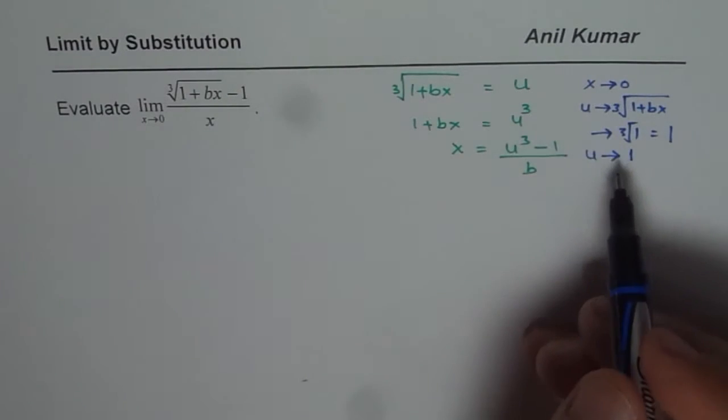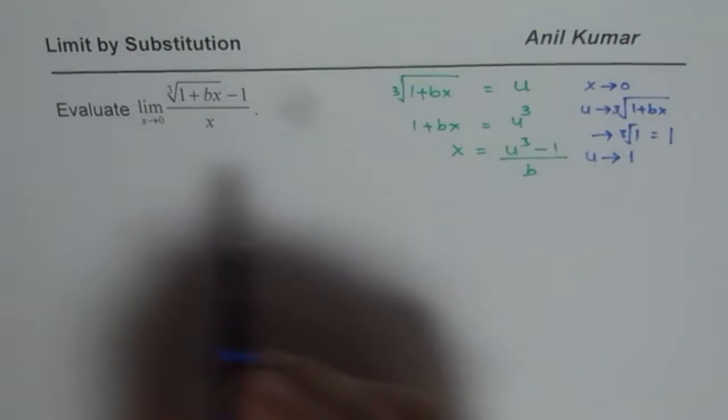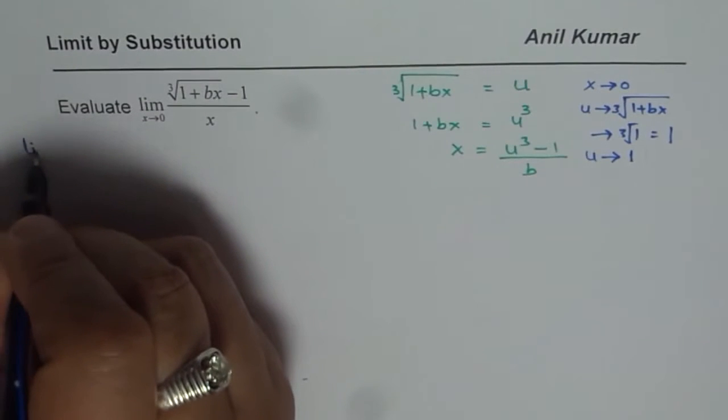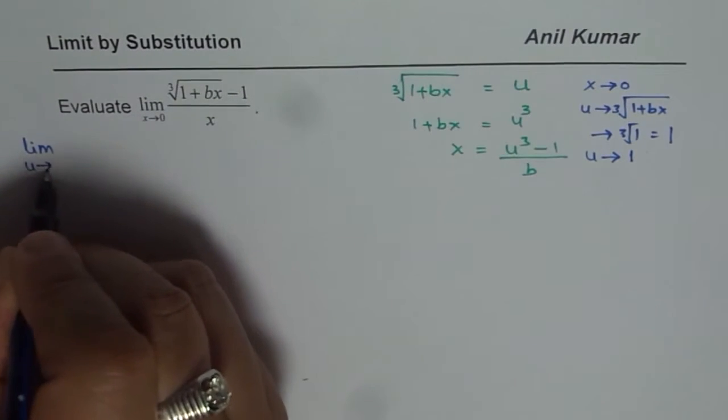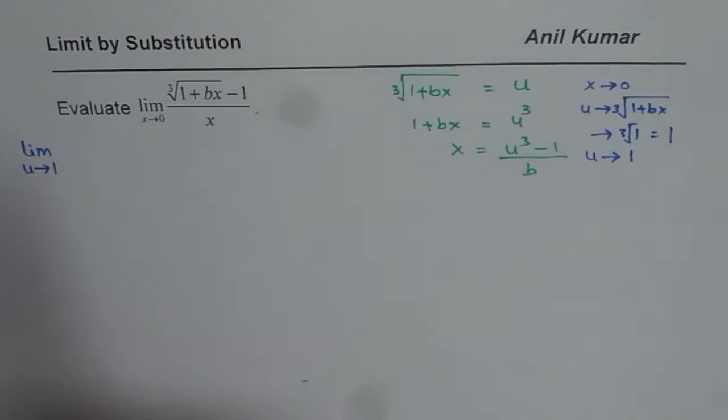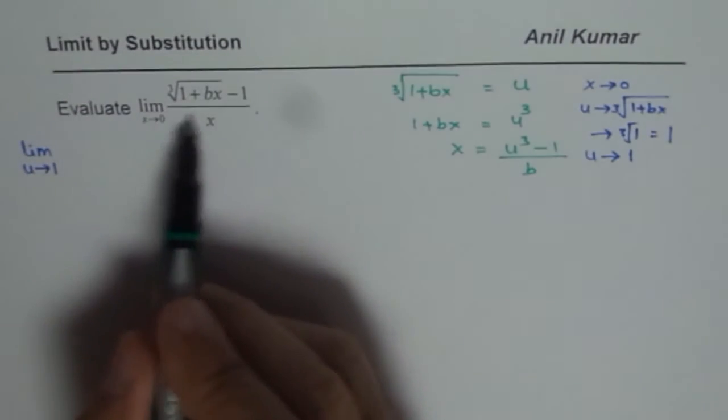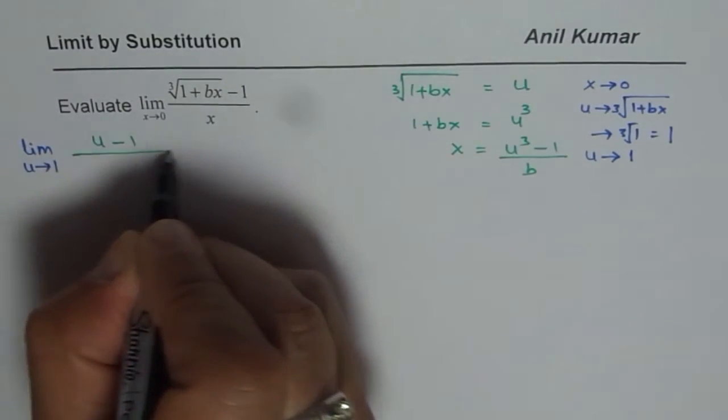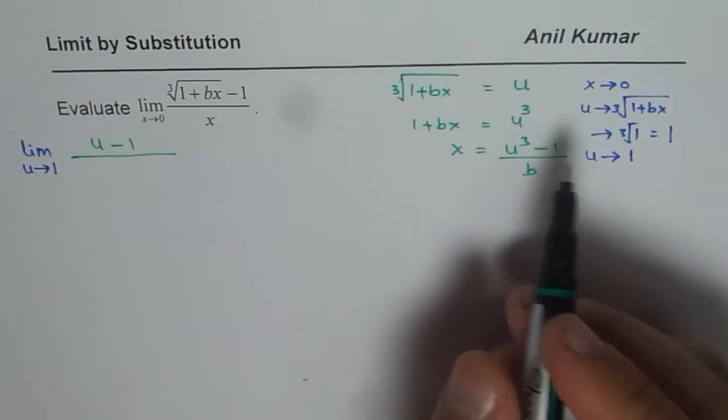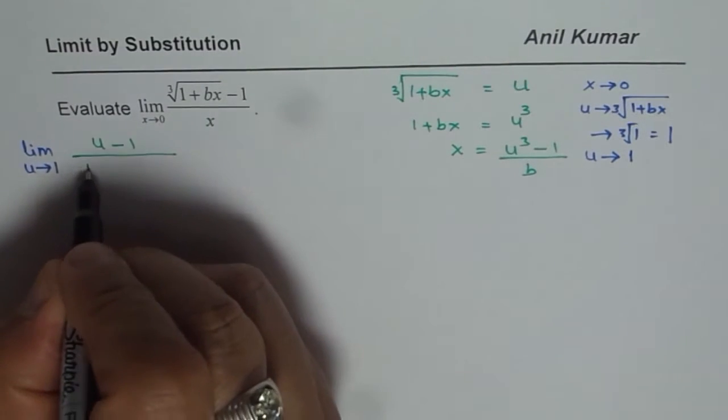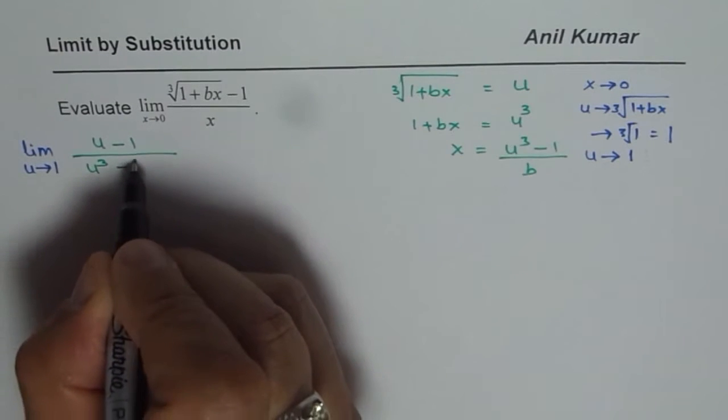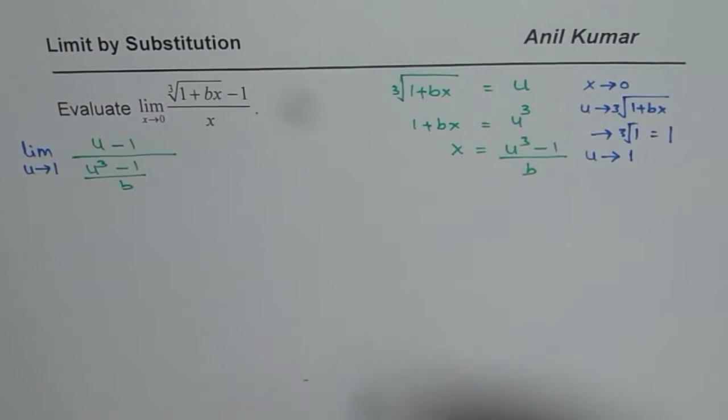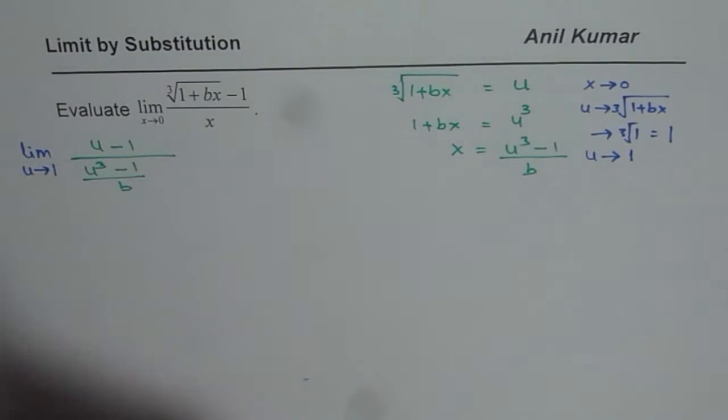Now considering these two things we can rewrite our question and we will say limit u approaches 1. And for the function we will substitute u for the cube root part. So we will say u minus 1 divided by, and instead of x we will write u cubed minus 1 divided by b. So that is how our function can be written.